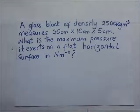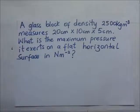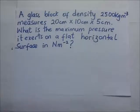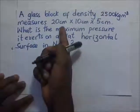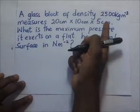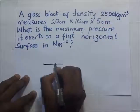A glass block of density 2500 kilograms per meter cubed measures 20 cm by 10 cm by 5 cm. What is the maximum pressure it exerts on a flat horizontal surface in newtons per meter squared? Let's draw a sketch of the block.